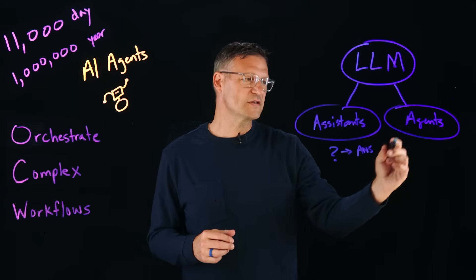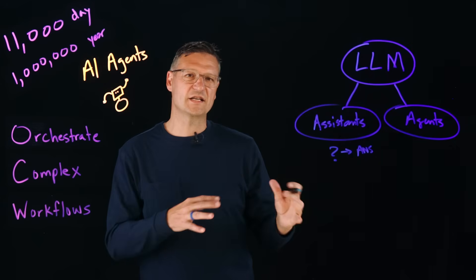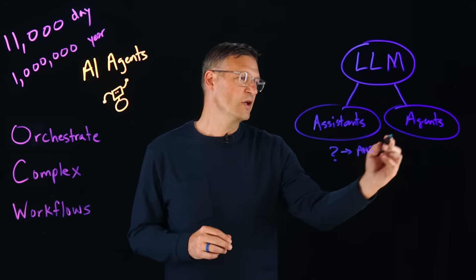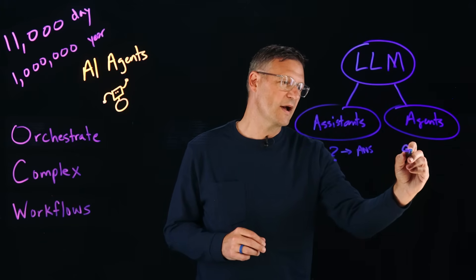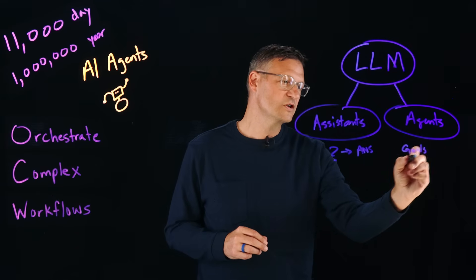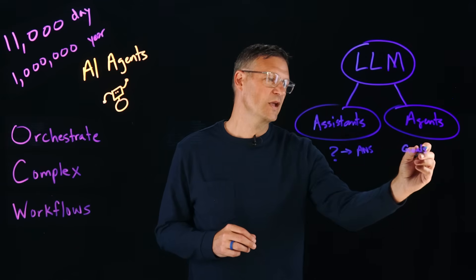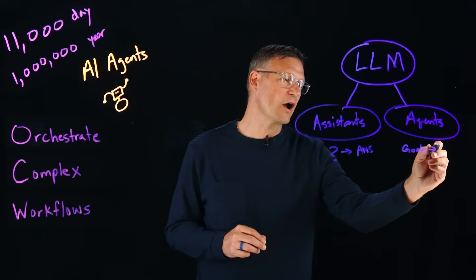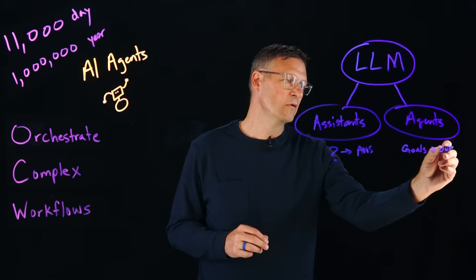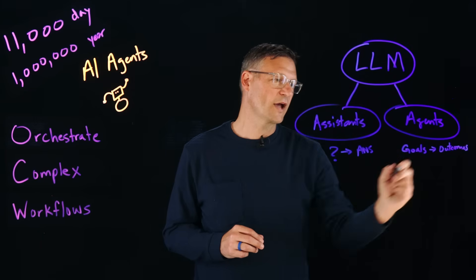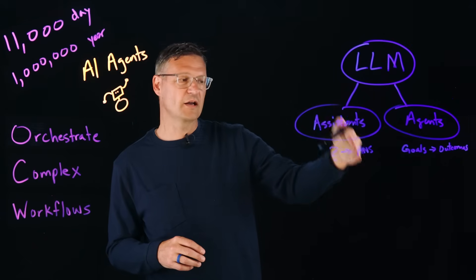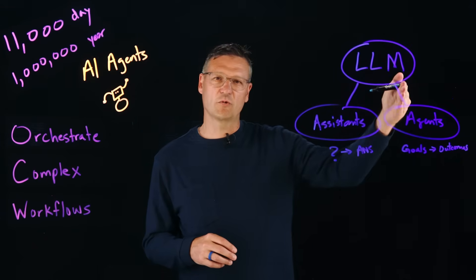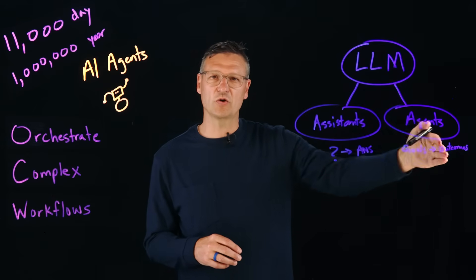Now, with agents, agents don't really need to be prompted in this way. With agents, what we're really doing is we're talking about defining goals, and then what we want out are outcomes. Assistants, we're asking questions and looking for answers. Agents, we're defining goals and we're looking for outcomes.